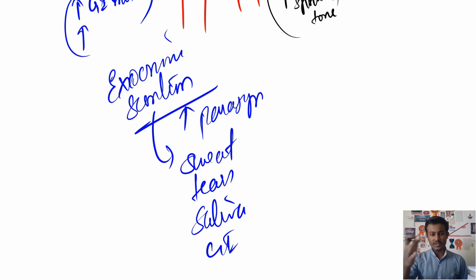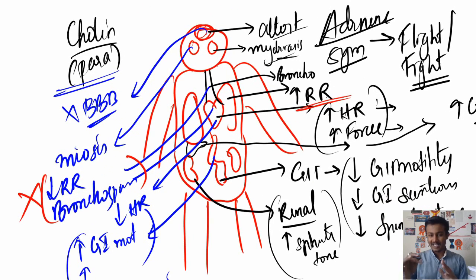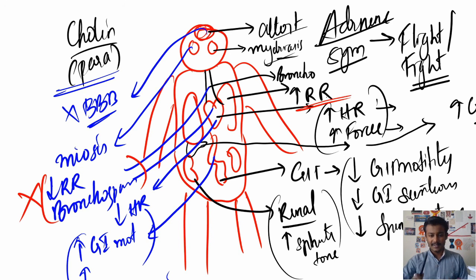In the case of sympathetic stimulation, you won't have those exocrine secretions. If you think of the autonomic nervous system this way, it's going to be easy to learn your pharmacology and physiology. Keep this in mind while learning your drugs and your nervous system, and it will be much easier. I hope this helped and simplified your understanding of the autonomic nervous system. Thank you for watching — subscribe, like, and comment. See you in the next video!